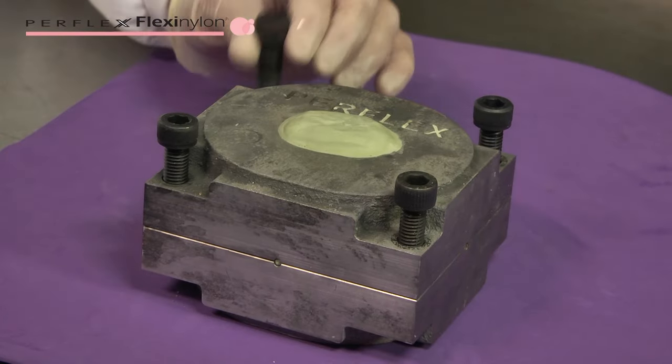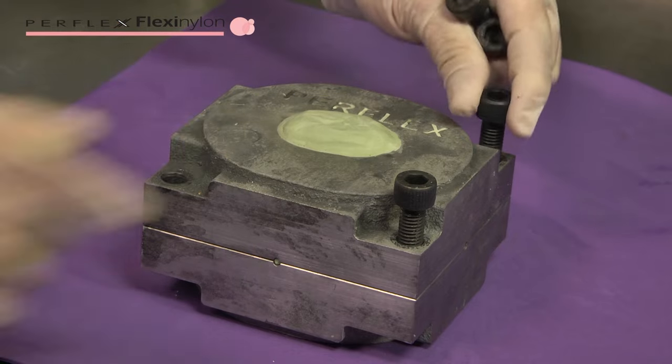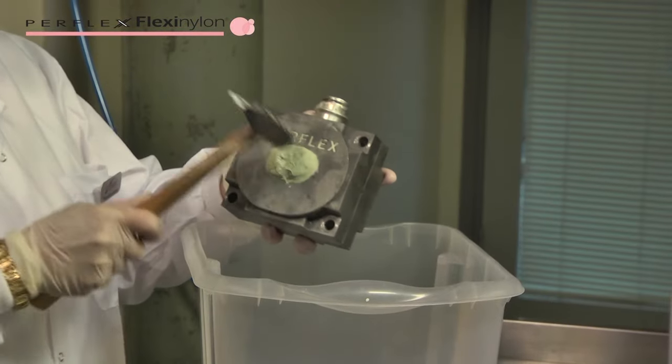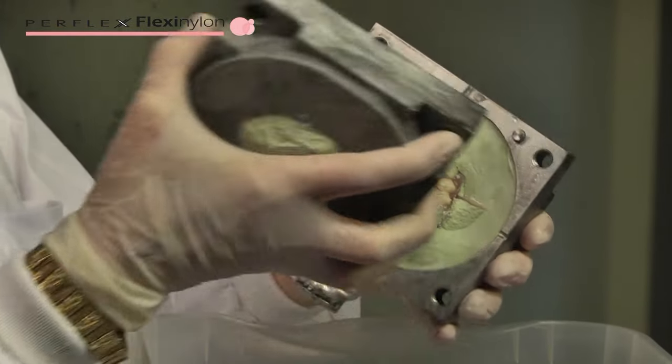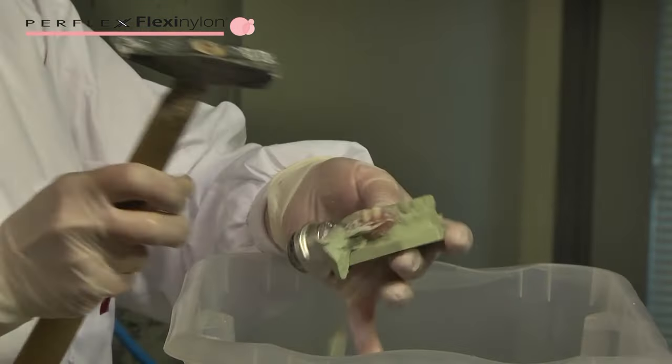Unscrew the bolts from the flask. Hit the flask with a hammer in the stone area on both sides of the flask and open the flask. Hit in the middle of the stone and open. Remove all remaining stone with plaster scissors.